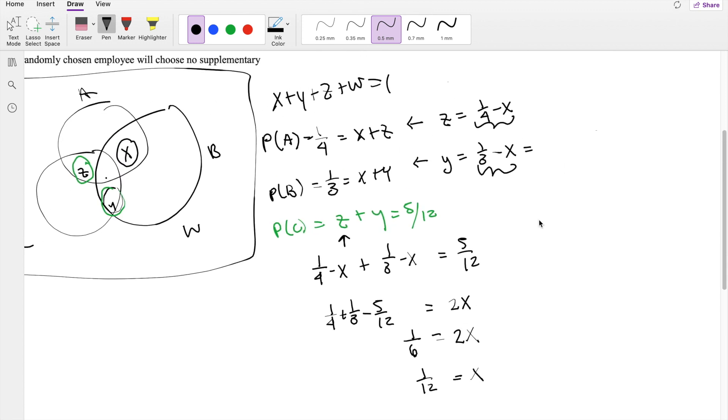If we know X is equal to one-twelfth, we can actually figure out what Z is. Z is just equal to one-fourth minus one-twelfth, which is equal to one-sixth. And likewise, Y is equal to one-third minus one-twelfth, which is equal to one-fourth.